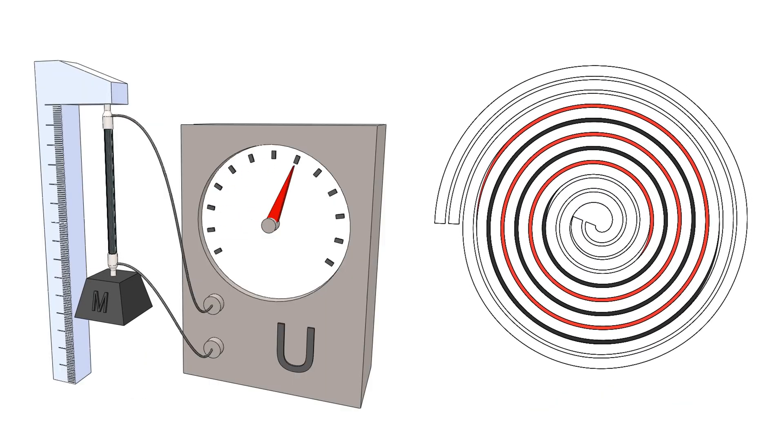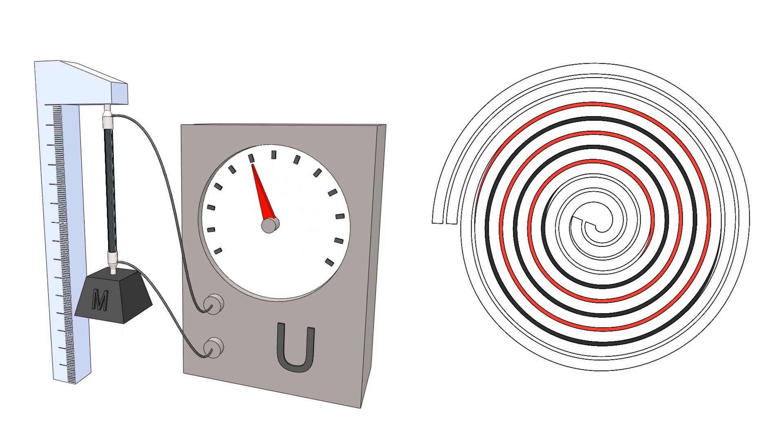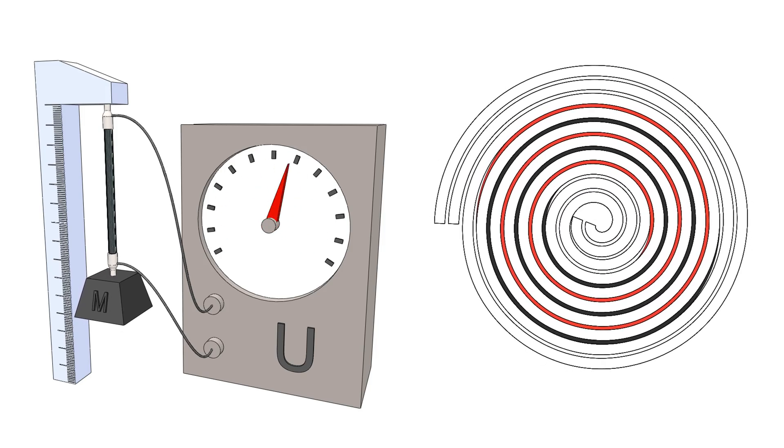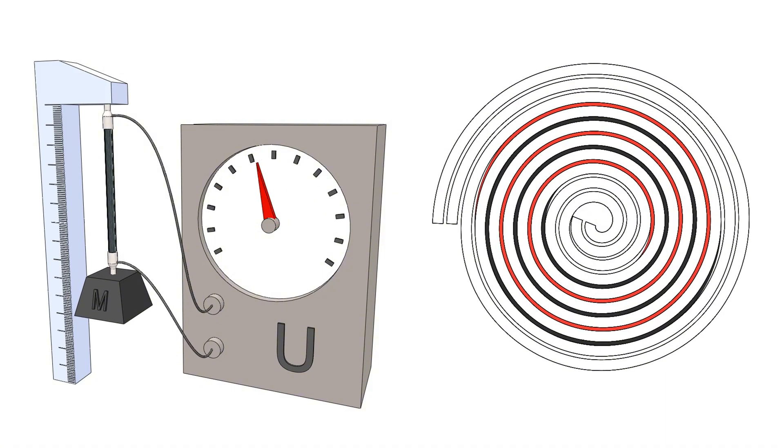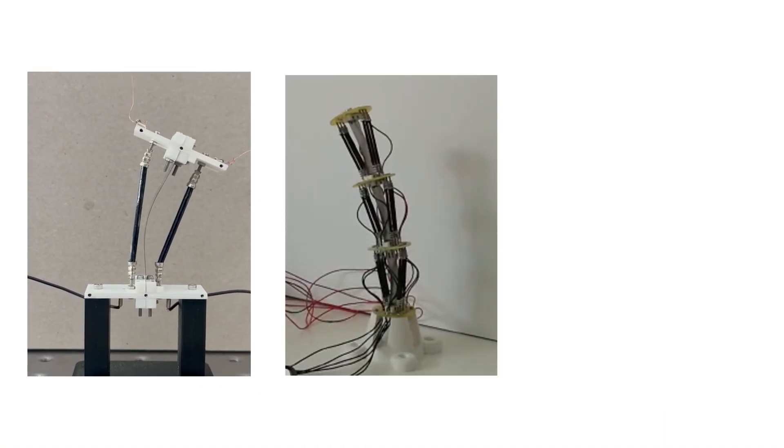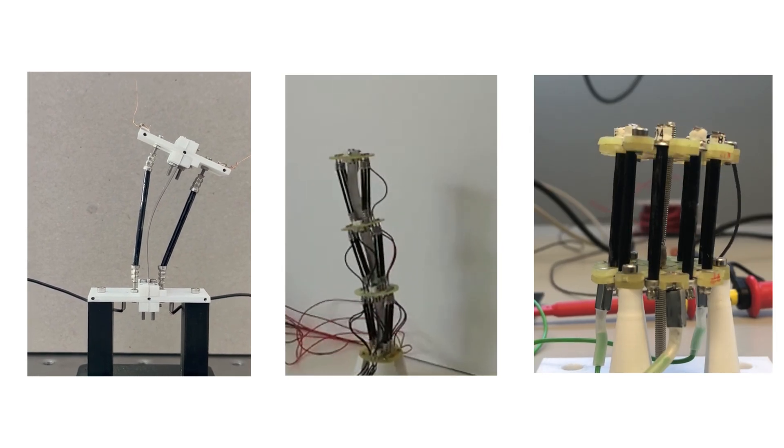When voltage is applied, electrostatic forces compress the RDEA radially, which causes it to extend axially. That gives us a compact versatile actuator, one we already use in a wide range of systems.